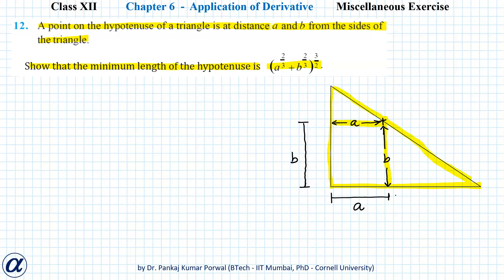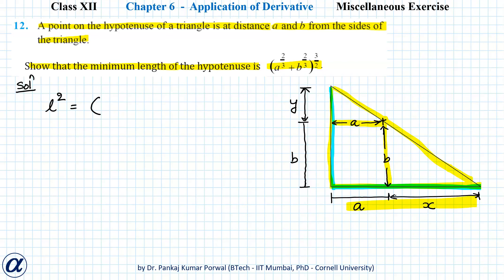The length of the hypotenuse can be written in terms of the lengths of the sides, but we don't know these distances, so let's call them x and y. Now I can write the square of the length of the hypotenuse as the square of the length of this side, that is (a + x)², plus the square of the length of this side, that is (b + y)². Here A and B are given constants, but x and y are variables, and we will have to eliminate one of them using the geometry of the triangle.